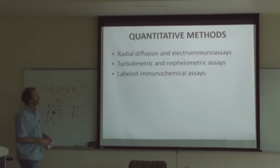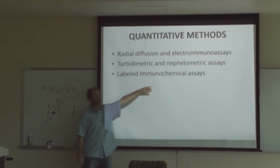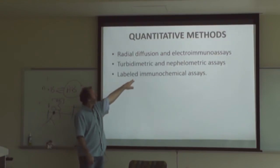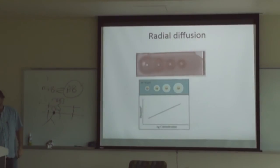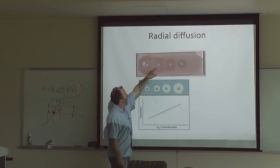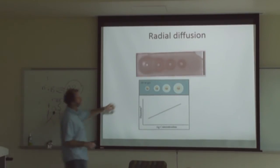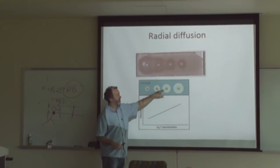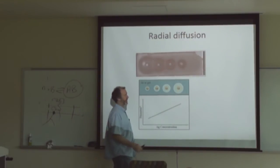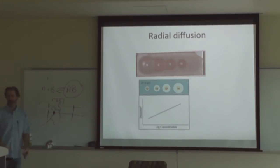For quantitative immunomethods, radial immunodiffusion allows you to generate a standard curve based on how far antigen diffuses out of a well into a gel containing antibody. You have a known antigen as a standard, measure the radius from the standards to generate a standard curve, then measure the radius from an unknown sample and plot it against the line to estimate the antigen concentration in your sample.